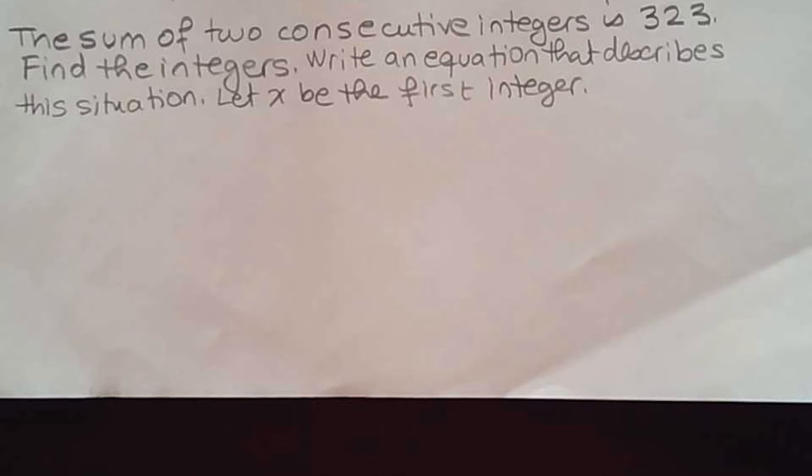The sum of two consecutive integers is 323. Find the integers. Write an equation that describes this situation. Let x be the first integer. We have two consecutive integers, I don't know where I'm starting, so we're letting x be the first integer.